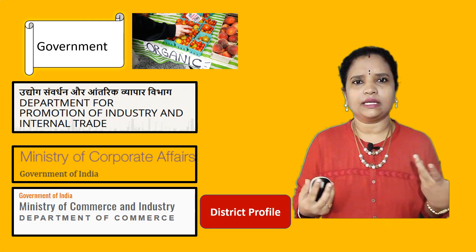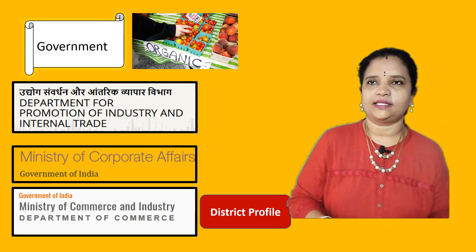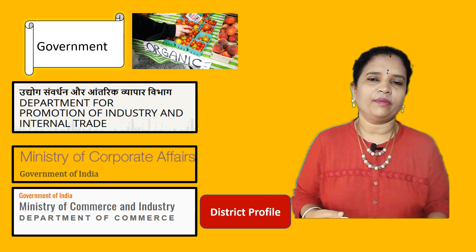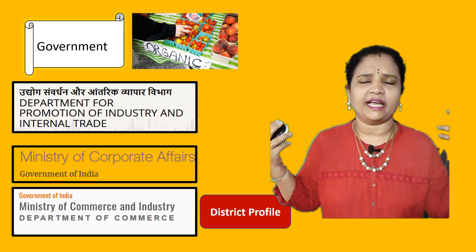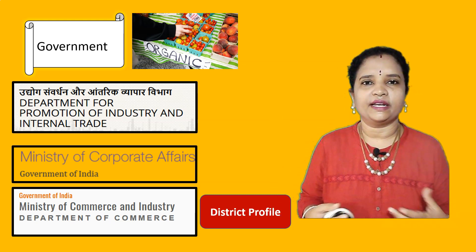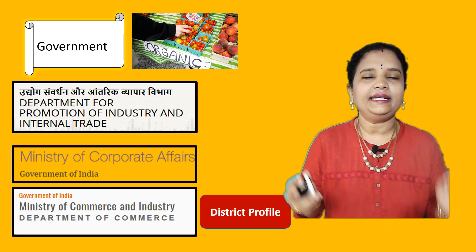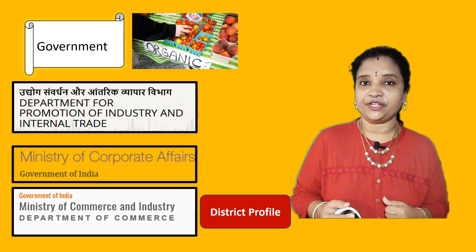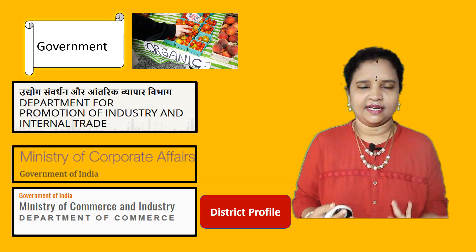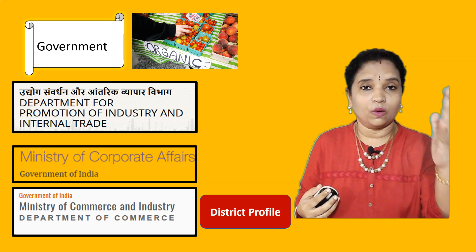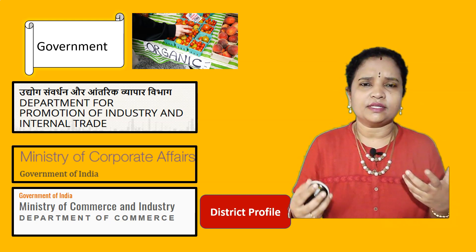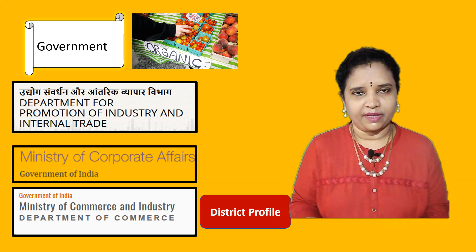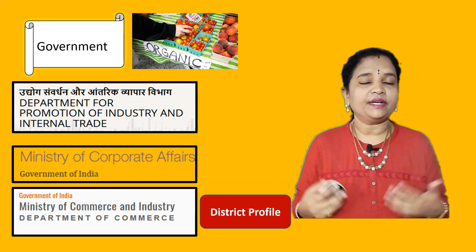The third important source is the government. The government is doing a lot of reports. If an entrepreneur wants to start something, for example in the organic space because that is a trend now, the Government of India has recently published a report in partnership with Yes Bank about organic material — what organizations are working in that space, how to contact farmers, every detail is there. Then there is the Department for Promotion of Industry and Internal Trade, which also publishes a lot of reports and statistics. The Ministry of Corporate Affairs produces statistics which give very fresh insights into which industry is doing well, what is upcoming, and what hurdles people are facing. So government is a very important source.